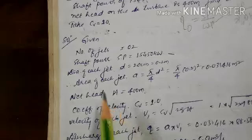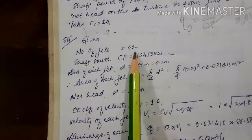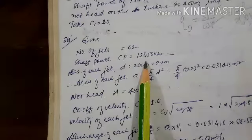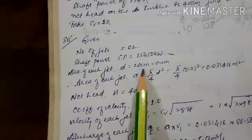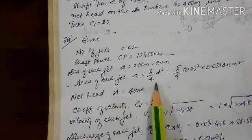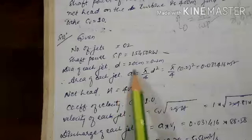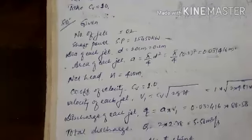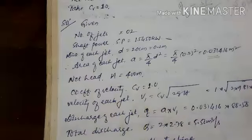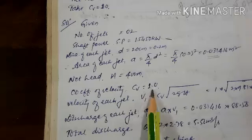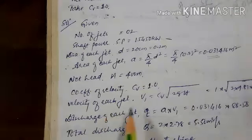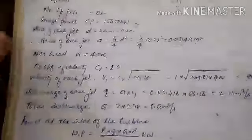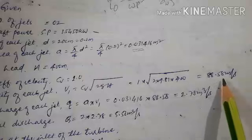Given data: number of jets = 2, shaft power given, diameter of each jet = 20 cm = 0.2 meter. Area of each jet = (π/4)d². Net head H = 400 meter. Cv = 1. Actual jet velocity V1 = Cv × √(2gH) = 88.58 meter per second.